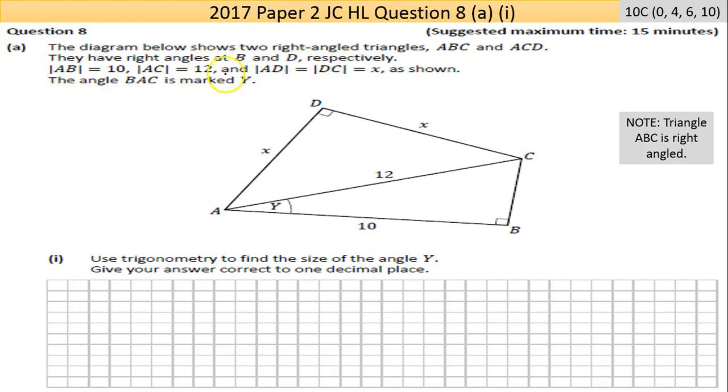The length of AC is 12, that's marked there. The lengths of AD and DC are equal, so AD is there and DC is there, so we're going to call them X just to show they're the same number.